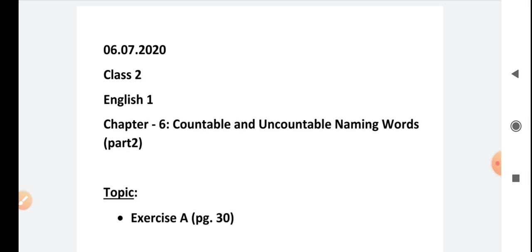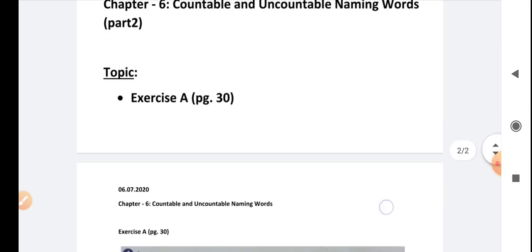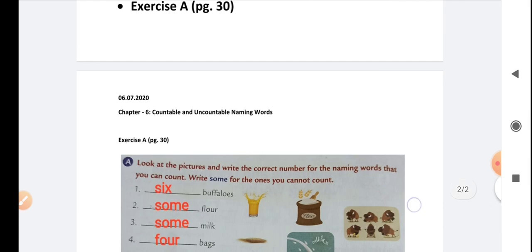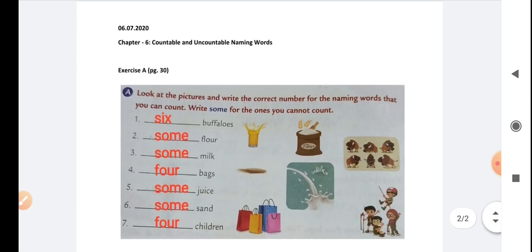Class 2 English 1, Chapter 6: Countable and Uncountable Naming Words, Part 2. Topic for today is Exercise A given on page number 30. Dear children, in the morning when we were having our zoom online class, I was explaining you about this chapter, countable and uncountable naming words.